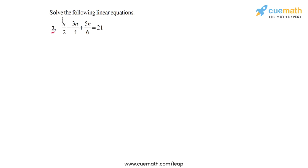In question 2, we have to solve this equation: n/2 minus 3n/4 plus 5n/6 is equal to 21. Let me show you two slightly different ways of solving this same equation.